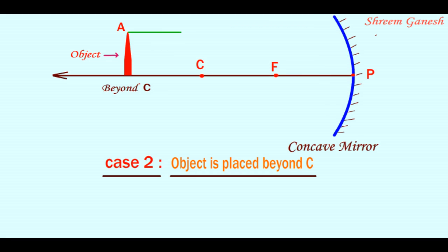The first incident ray is parallel to the principal axis and it passes through the principal focus after reflection. The second incident ray is passing through the principal focus and it becomes parallel to the principal axis after reflection.